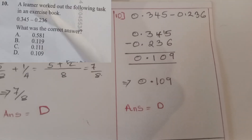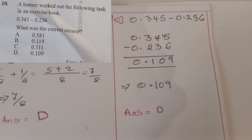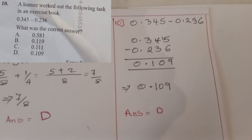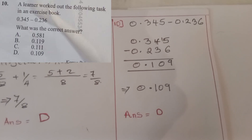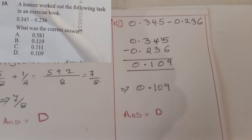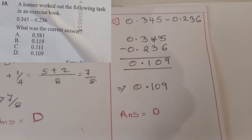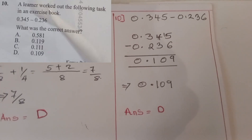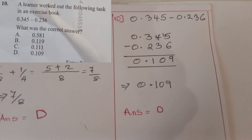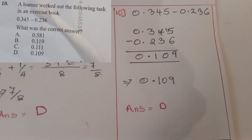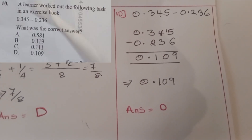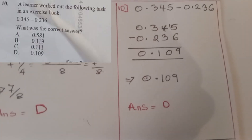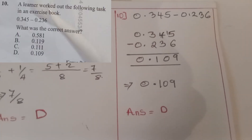Question ten: a learner worked out the following task in an exercise book. When you subtract the first value from the second, you come up with 0.109. The correct answer was D.